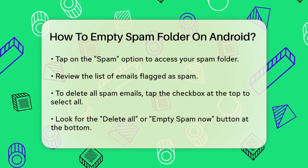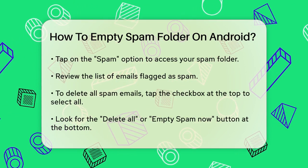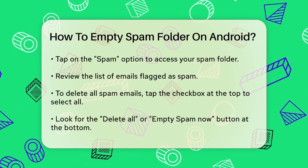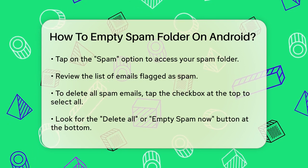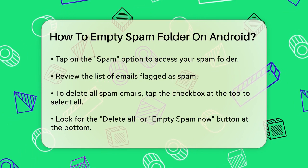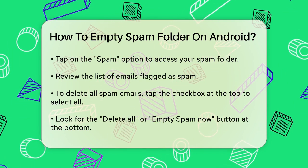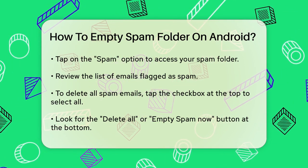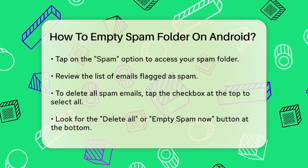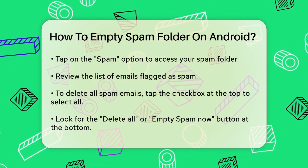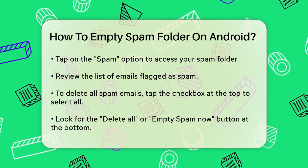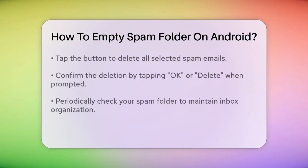Once you've opened the app, tap on the menu button, which is typically a hamburger icon — three horizontal lines in the top left corner of the screen. This will open a list of options. Scroll down until you find the Spam or Spam Messages option and tap on it. This will take you to your spam folder, where all the emails marked as spam are stored.